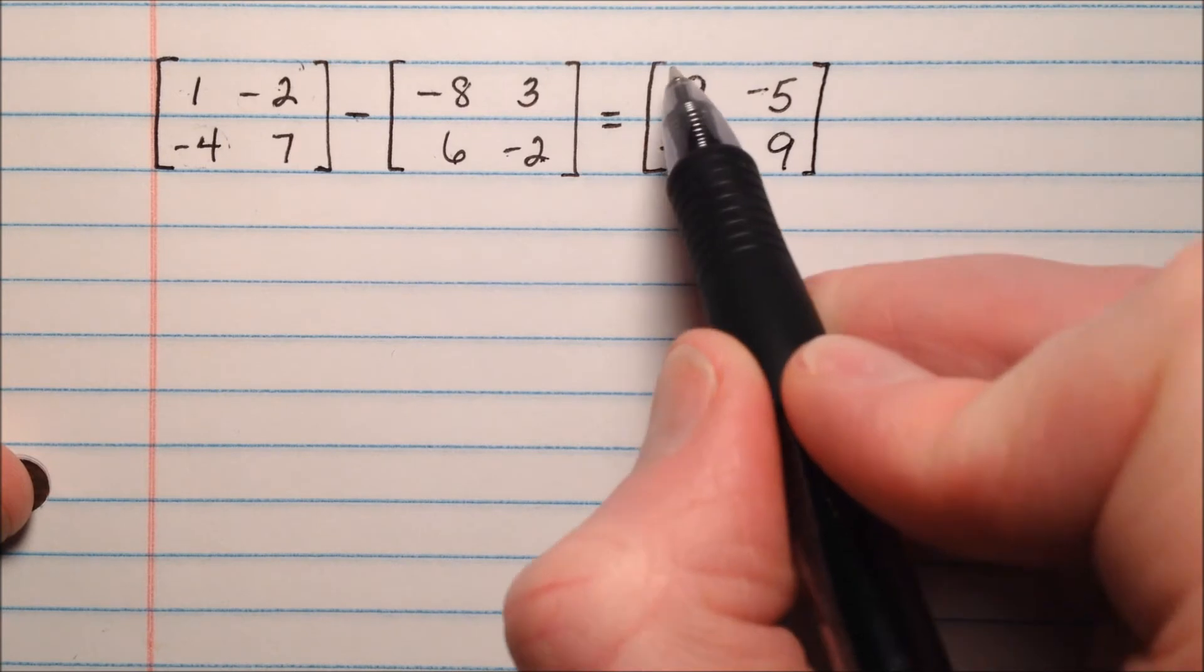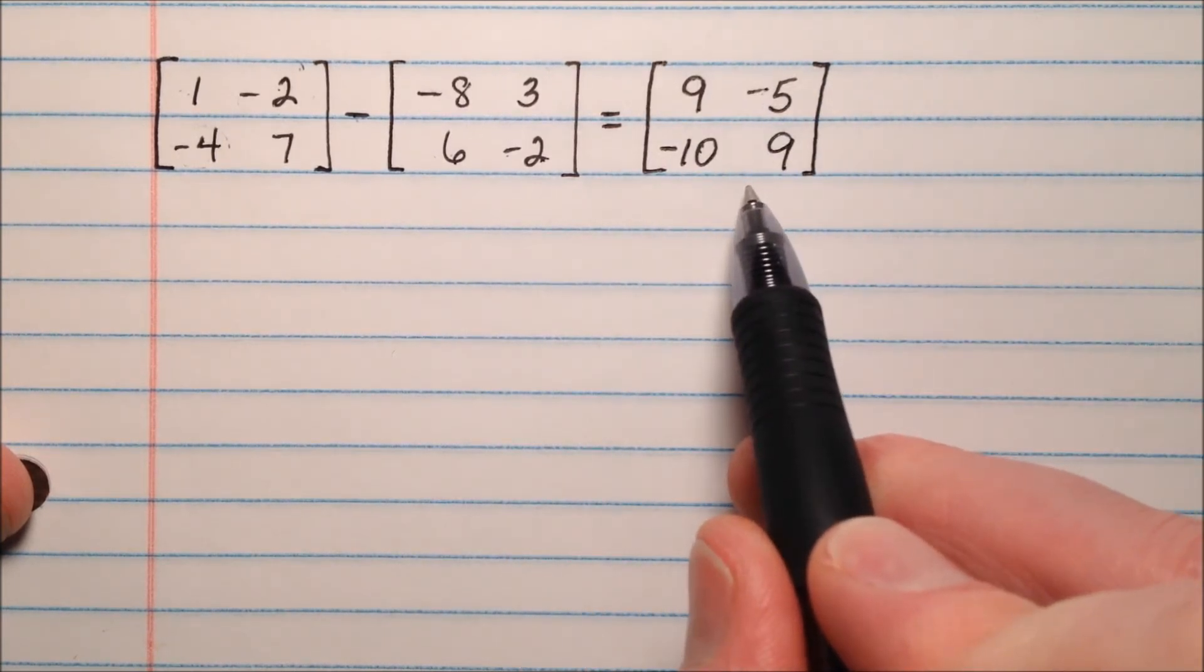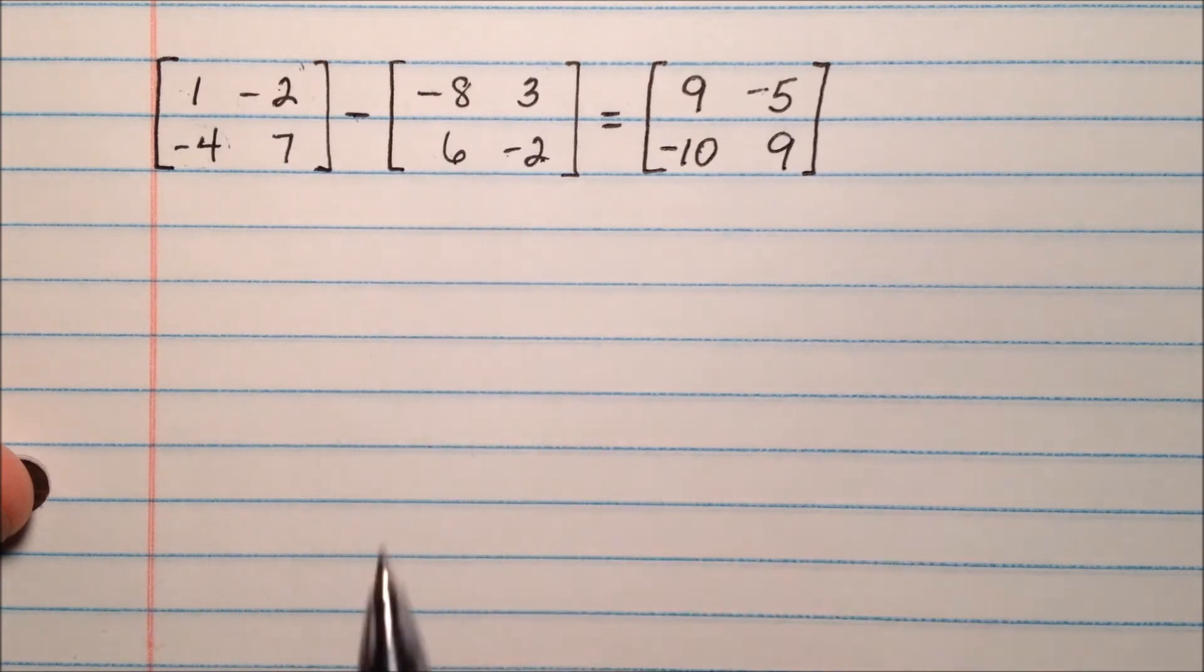I'm going to close up that matrix. This 2 by 2 matrix is the matrix we get when we subtract these 2 matrices.